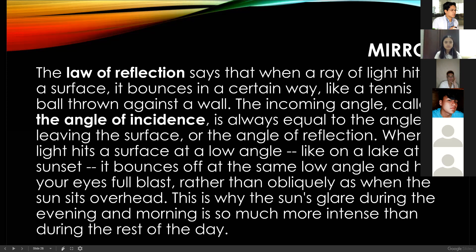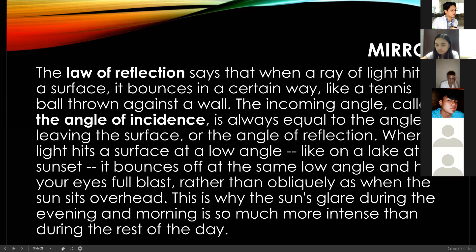When light hits a surface at a low angle — like on a lake at sunset — it bounces off at the same low angle and hits your eyes full blast rather than obliquely as when the sun is overhead. This is why the sun's glare during the evening and morning is so much more intense than during the rest of the day. So if refraction is bending, reflection is bouncing. There is a certain angle called the angle of incidence, which is equal to the angle leaving the surface.